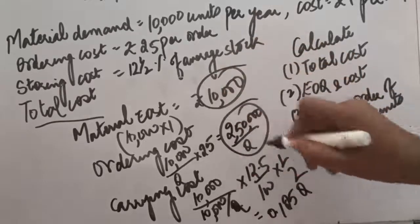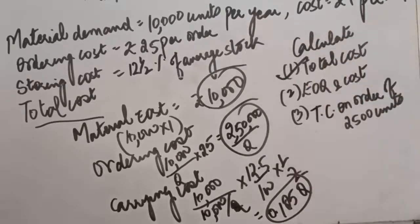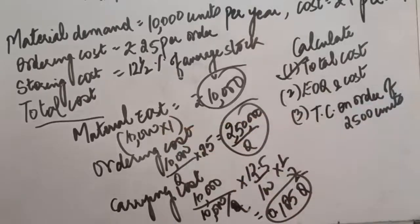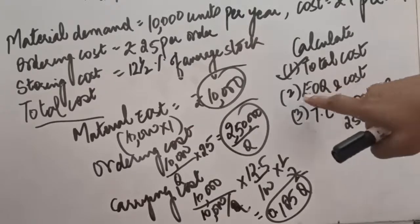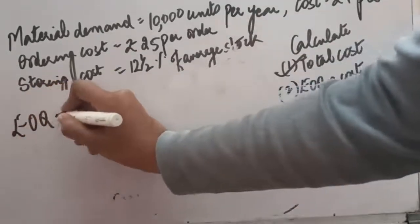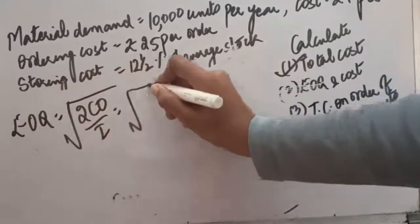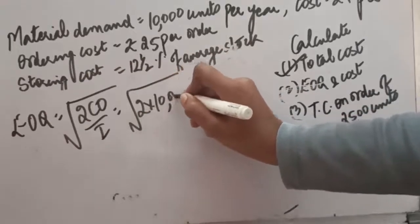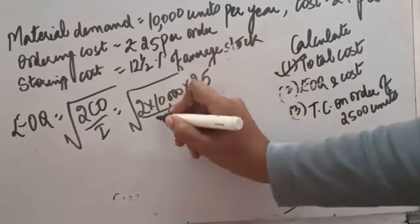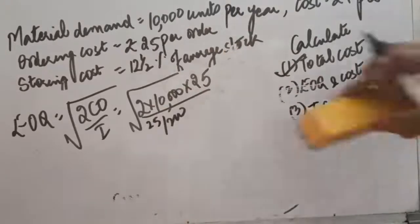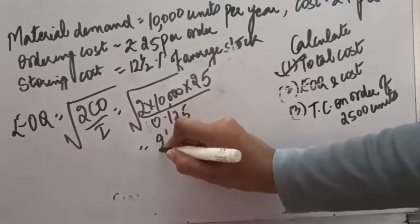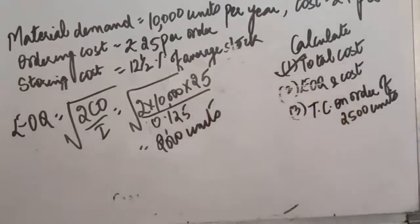Moving to point two, we calculate the EOQ. The formula for EOQ is the square root of 2 times consumption times ordering cost divided by carrying cost rate i. Here consumption is 10,000 units, ordering cost is rupees 25, and i is 12.5 percent, which is 25 by 200 or 0.125. Solving under the square root gives EOQ equals 2000 units.